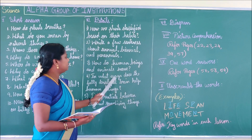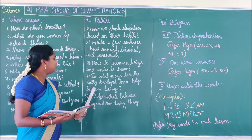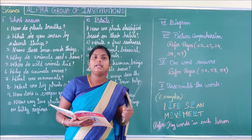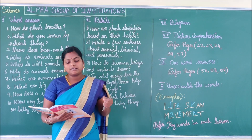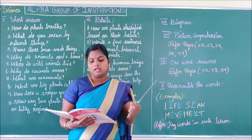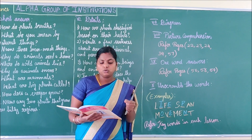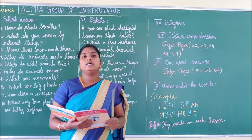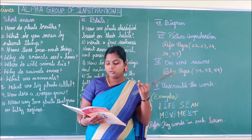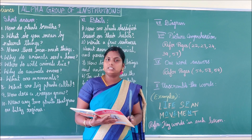Next question: In what ways does the fully developed brain help human beings? The fully developed brain helps human beings to think, reason out, recollect and to do many more things.